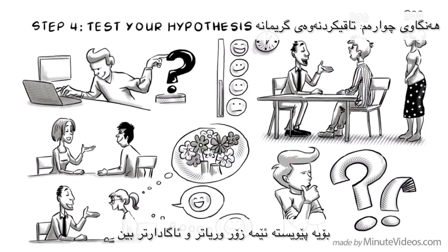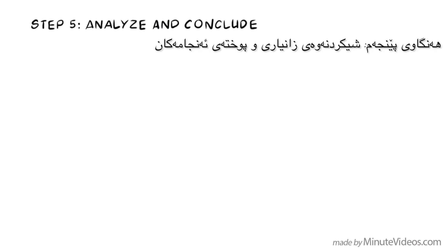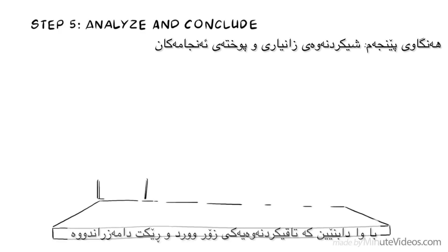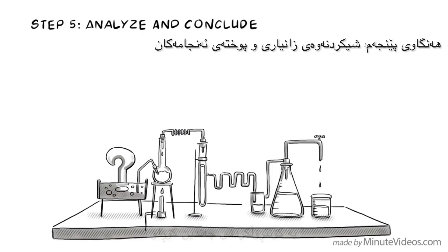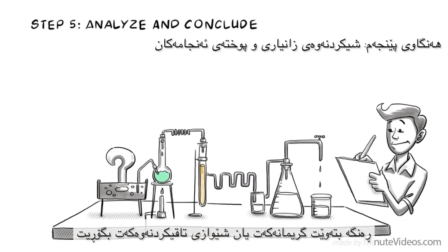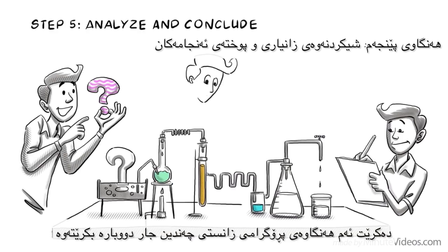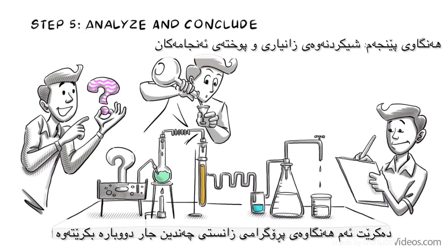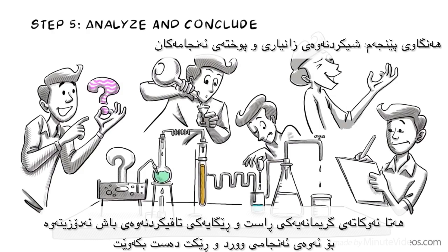So, clearly, we would need to be much more careful. Step 5: Analyze and conclude. Let's assume that you designed a very careful experiment, controlling for as many variables as possible. Now you can analyze the data to see if your hypothesis is correct or incorrect. Depending on your findings, you may want to change your hypothesis or change the design of your testing. Perhaps you have discovered an even more interesting question. This stage of the scientific method can be repeated as many times as necessary, until you find just the right hypothesis and test method to find accurate results.